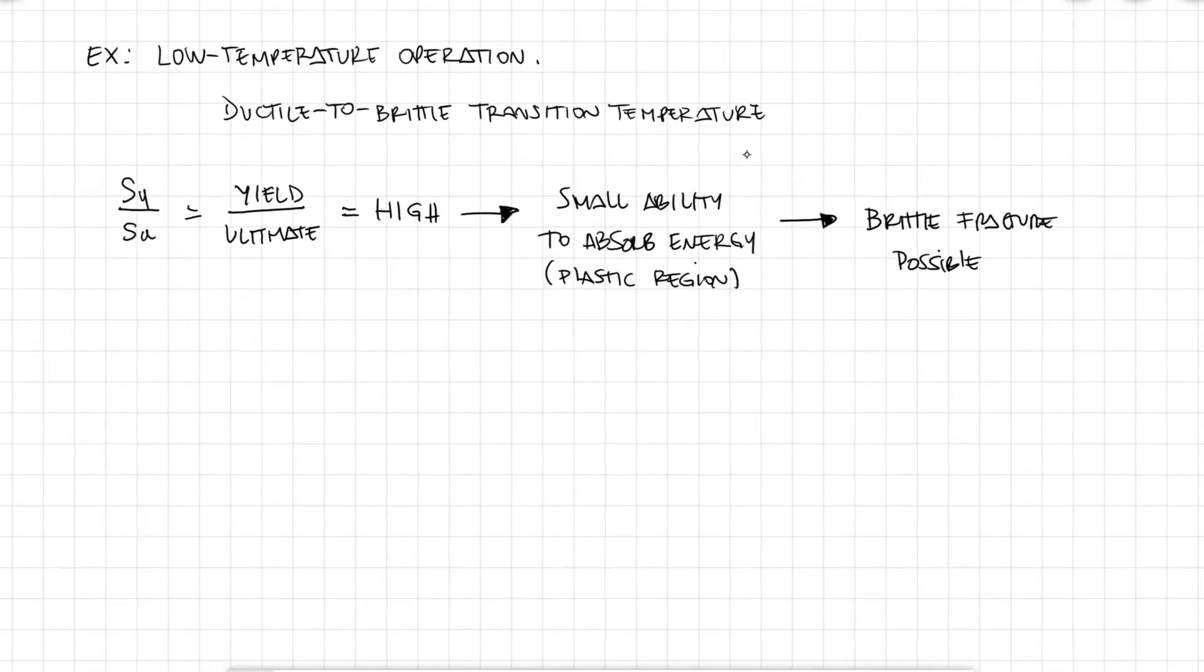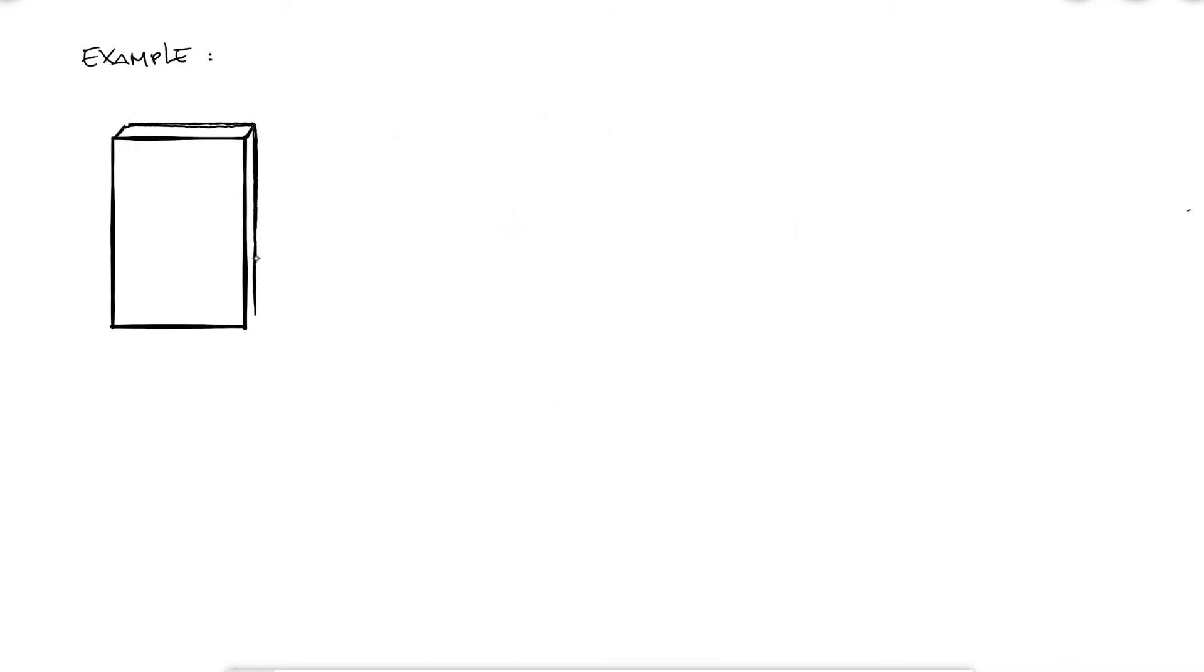The fracture toughness to the stress intensity factor ratio can be used as a factor of safety. Let's take a look at an example where we put everything we've learned to use. We have a titanium plate in longitudinal tension that has a crack right in the middle. We want to know what the current factor of safety is and the maximum tensile force before fracture would occur.